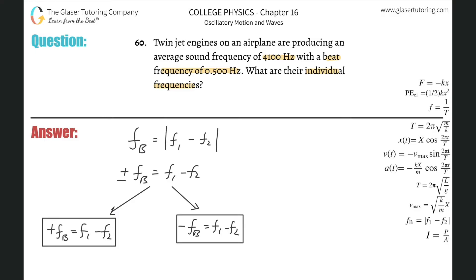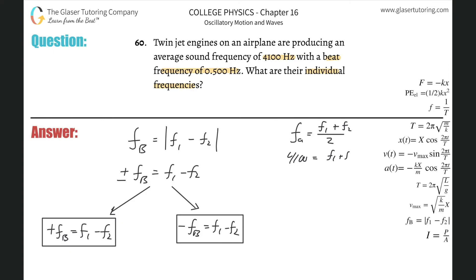We don't know what the frequencies are, but they did tell us the average sound frequency. The average frequency is just a simple average: F_avg = (F1 + F2) / 2. They told us it's 4100, so 4100 = (F1 + F2) / 2, which works out to 8200 = F1 + F2.